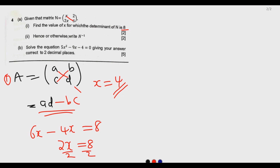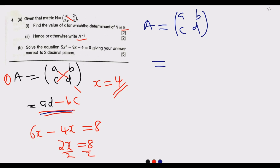The question goes on to ask us to write N to the power negative one — that means find the inverse of matrix N. To find the inverse of a matrix [a, b; c, d], the formula is: one over the determinant of A, multiplied by the adjusted matrix.